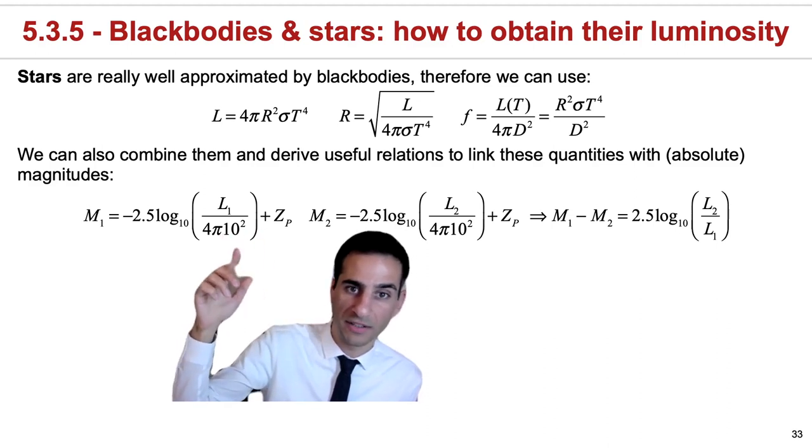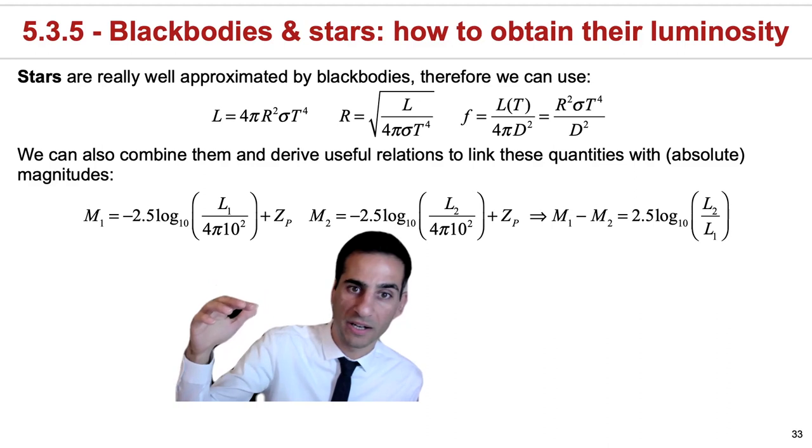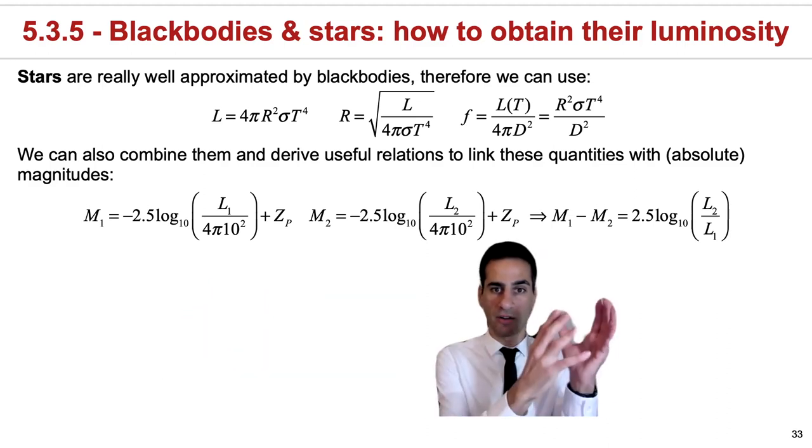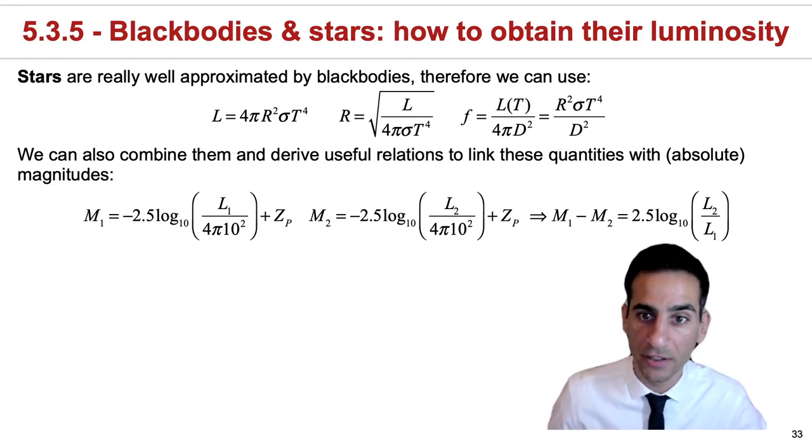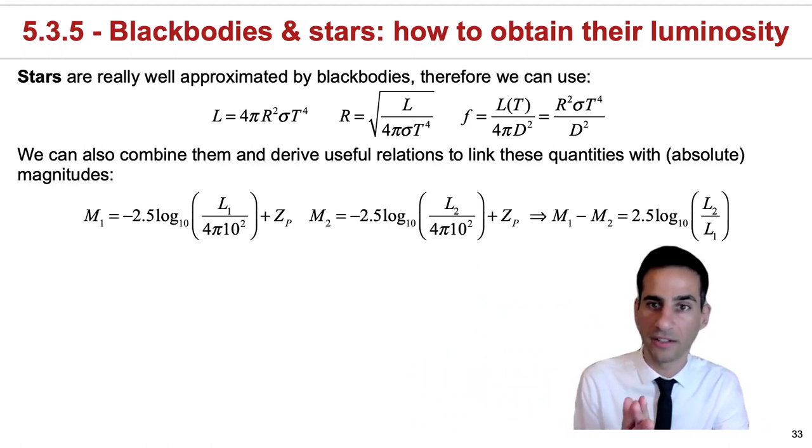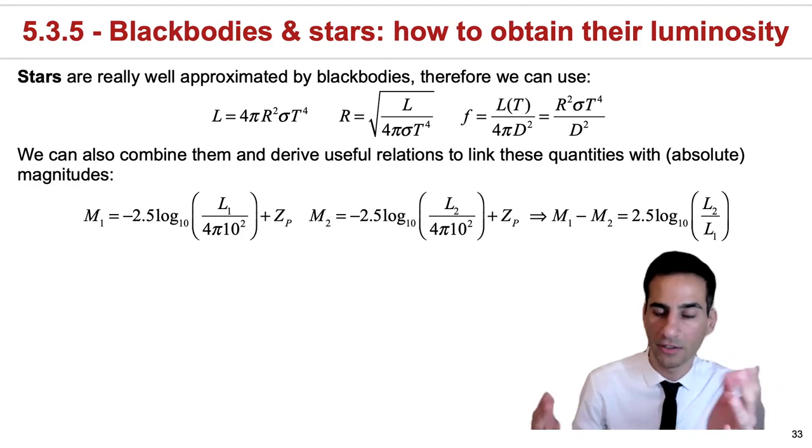And the luminosity distance, and also remembering how a magnitude system is defined. If you look at the difference of magnitudes, in this case absolute magnitudes, you're looking at essentially the ratio of luminosities.